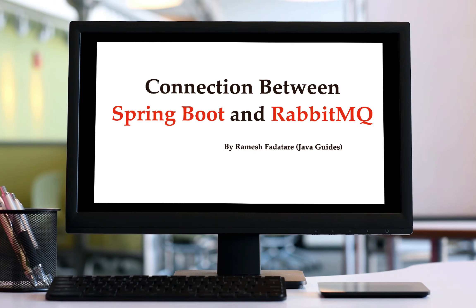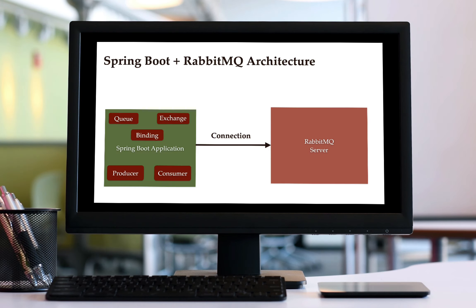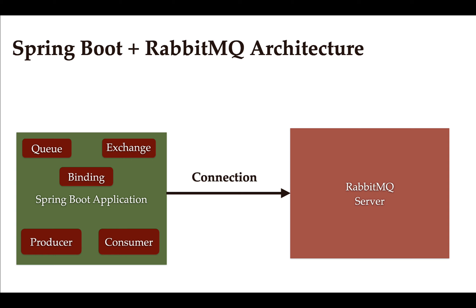Welcome back. In the previous lecture we created and set up a Spring Boot project in IntelliJ IDEA. In this lecture we'll see how to connect our Spring Boot application with a RabbitMQ server. So far we have a RabbitMQ server running in a Docker container and a Spring Boot project in IntelliJ IDEA. We need to connect them, and once we do that we can create a queue, exchange, and binding, then a producer and consumer.